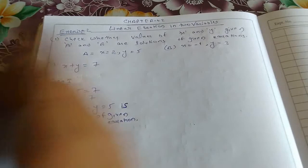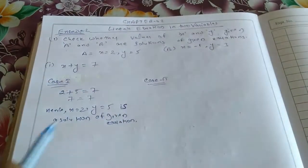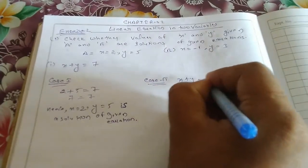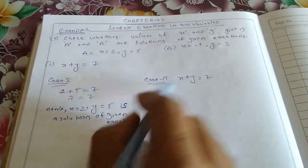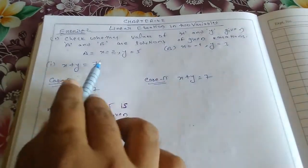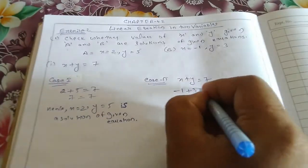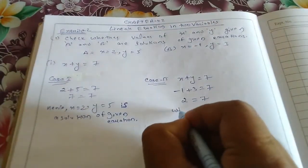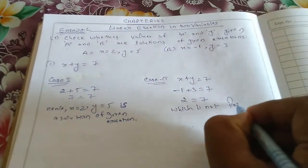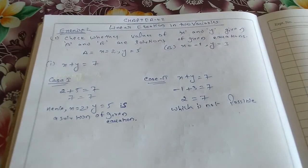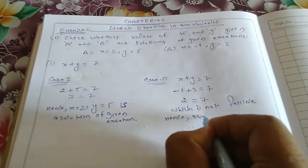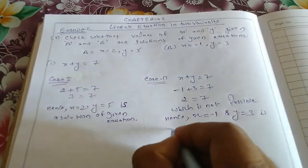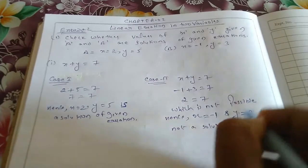Now Case Number 2: x equal to minus 1, y equal to 3. Putting these values, x equal to minus 1 plus y equal to 7, then x equal to 7. So 2 equals to 7, which is not true, which is not possible. Hence, x equals to minus 1 and y equals to 3 is not a solution of the given equation.